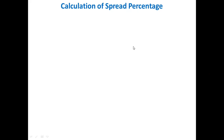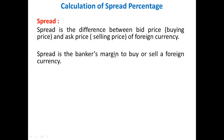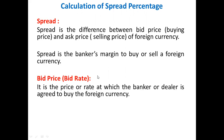To calculate the spread percentage, we have to understand the meaning of spread. Spread is the difference between the bid price, also called the buying price, and the ask price, also called the selling price, of a foreign currency. The difference between the buying price and selling price of the foreign currency is called the spread. The spread is the banker's margin to buy or sell a foreign currency.